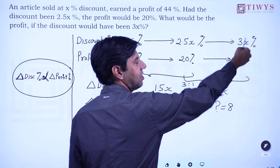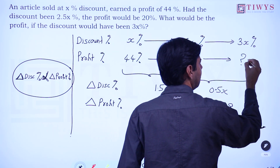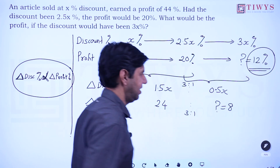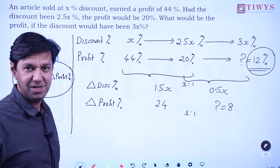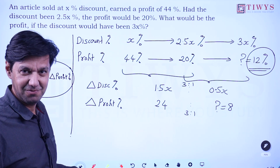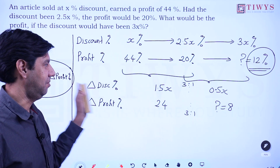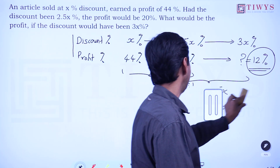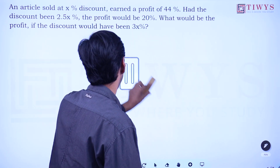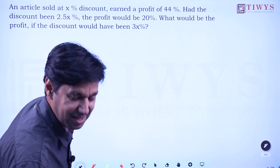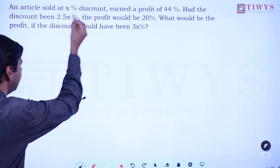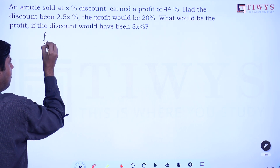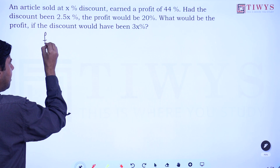The change is 8 percent. Since discount has gone up, profit will go down, so the answer is 20 minus 8 = 12 percent. This is the shortcut — a good time saver. The logic of why it works is also very interesting.